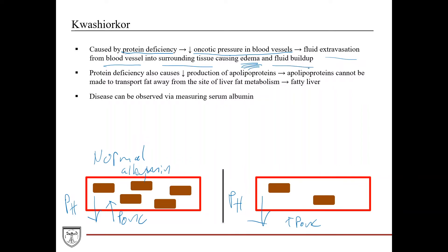Protein deficiency also leads to decreased production of apolipoproteins. Remember from unit 3, apolipoproteins transport fat away from the liver, the site of fat metabolism. As a result, you have buildup of fat in the liver, so you have a fatty liver. These individuals also have decreased production of immunoglobulins, so they're susceptible to infections.